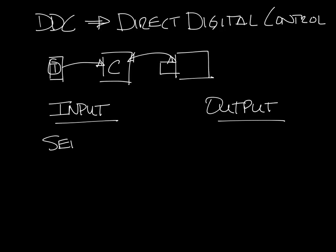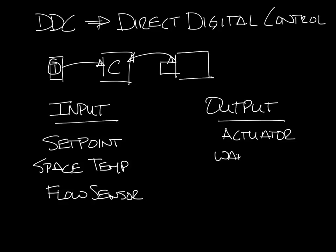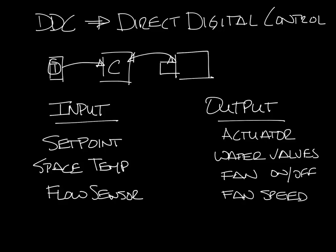Let's break down the operation of a VAV box and thermostat and label the inputs and outputs. The thermostat has a set point and measures space temperature, so these are both inputs to the controller. The VAV box's flow sensor is sending a pressure signal to the controller, so that's also an input. The controller is controlling the actuator that moves the dampers, the water valves that control the water coil, and turning the fan on and off — or possibly modulating the fan. All of these are outputs from the controller.